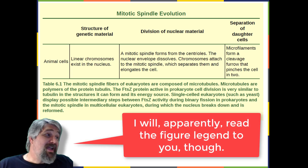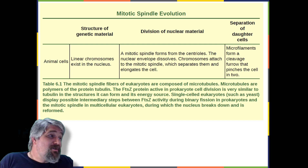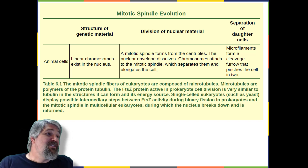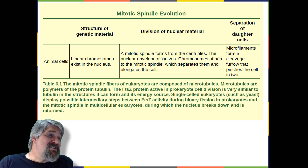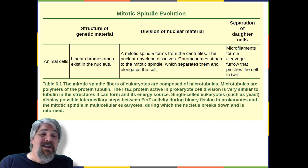The mitotic spindle fibers of eukaryotes are composed of microtubules. Microtubules are polymers of the protein tubulin. The FTSZ protein active in prokaryote cell division is very similar to tubulin in the structures it can form and its energy source. Single-celled eukaryotes, such as yeast, display possible intermediary steps between FTSZ activity during binary fission in prokaryotes and the mitotic spindle in multicellular eukaryotes, during which the nucleus breaks down and is reformed.